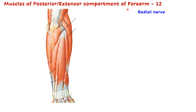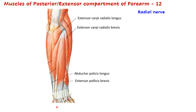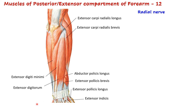Muscles of the posterior or extensor compartment of the forearm — there are 12 muscles in total and all of them are supplied by the radial nerve, which is a branch of the posterior cord of the brachial plexus. The muscles are: extensor carpi radialis longus, extensor carpi radialis brevis, abductor pollicis longus, extensor pollicis brevis, extensor pollicis longus, extensor indicis, extensor digitorum, extensor digiti minimi, and extensor carpi ulnaris. Whenever the word 'extensor' appears in forearm muscles, they are supplied by the radial nerve. The only muscle without the extensor prefix is abductor pollicis longus — specifically the longus, not the brevis — and it is also supplied by the radial nerve.